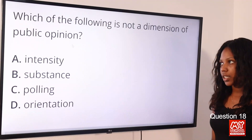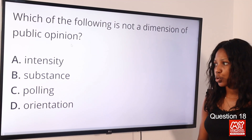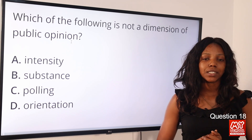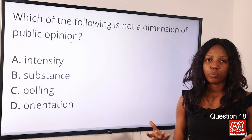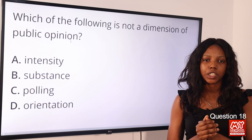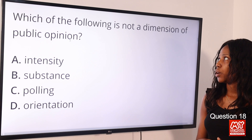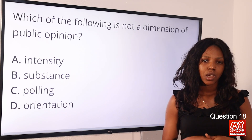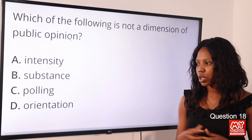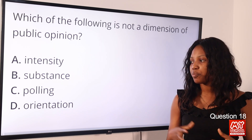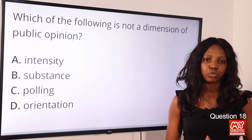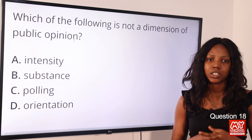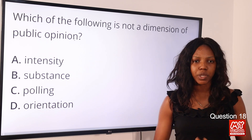Question 18: Which of the following is NOT a dimension of public opinion? Option A: intensity; option B: substance; option C: polling; option D: orientation. The answer is option B, substance. Public opinion is the view of the people on a particular issue. Its dimensions — ways of measuring it — include intensity, orientation, and polling (the process of voting to gauge the people's mind). Substance is not a dimension of public opinion.